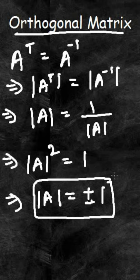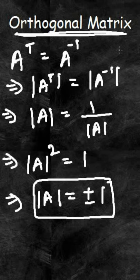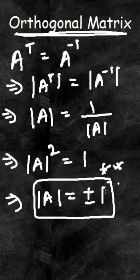So this is the final expression. This shows that if A is an orthogonal matrix, the value of its determinant will be either plus 1 or minus 1. This is a very important expression. Thank you.